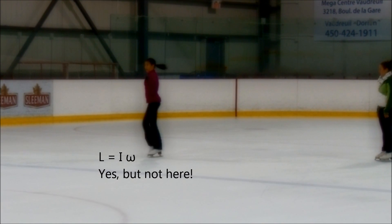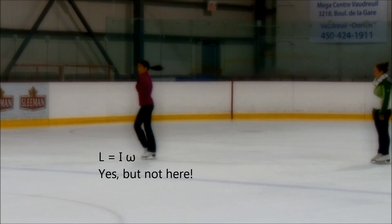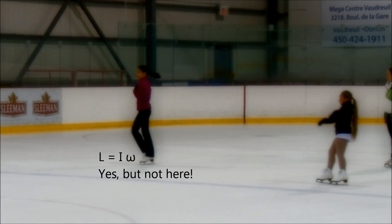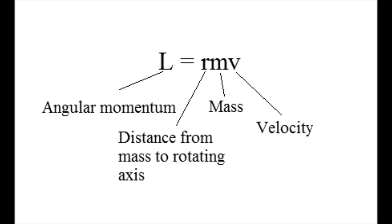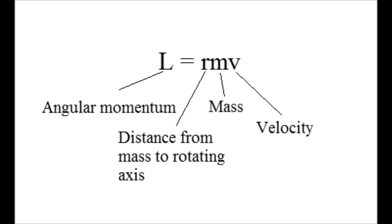You may remember L equals I omega from the jumps video. This does also apply to spins, but not this part of the spin. For this part of the spin, you need to know this other angular momentum equation: L equals R times M times V. Where L is the angular momentum, R is the distance from the mass to the rotating axis, M is the mass, and V is the velocity.